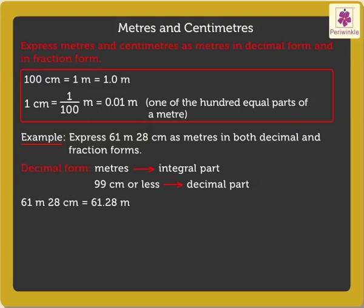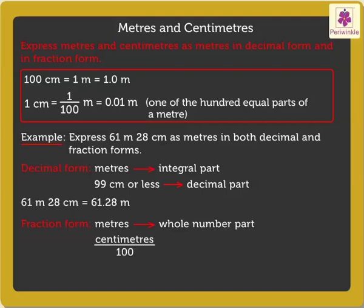Further, let us express it in fraction form. Here, meters form the whole number part and centimeters are written in the numerator with 100 in the denominator to get the fraction part. So, 61 meters 28 centimeters is expressed as 61 and 28 upon 100 meters as a fraction.